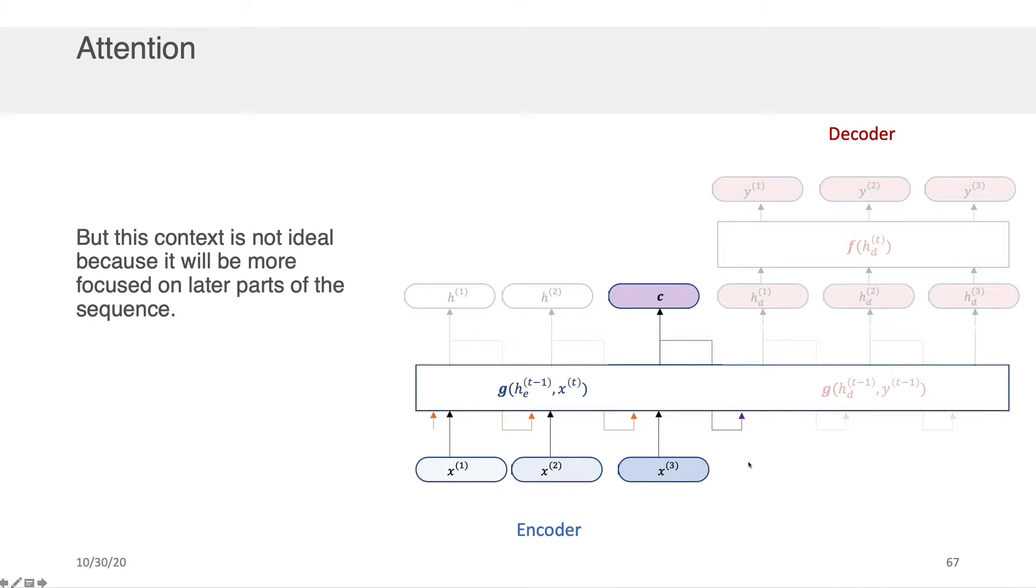The problem with this context though is that it's going to be focused on the later part of the sequence more than it will be on the earlier part of the sequence. Imagine if, for example, this function here, this g, was simply taking an average of h_e_t_minus_1 and x_t. As time goes on, if you're taking the average of things repeatedly that are occurring further back in the sequence and you're passing them in sequentially like that, the value from things very early in the sequence will get very smoothed out compared to the things that happen later in the sequence.